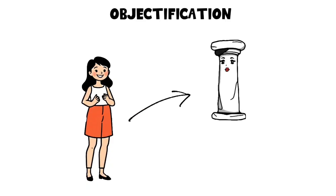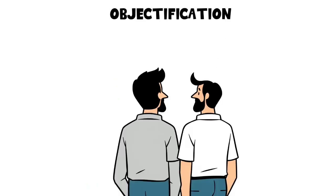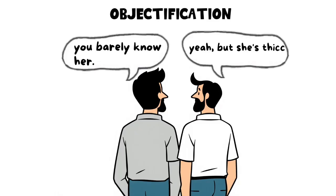Objectification. This mechanism reduces people to objects or categories to avoid emotional involvement. A person might refer to a romantic partner in purely physical terms to avoid intimacy.